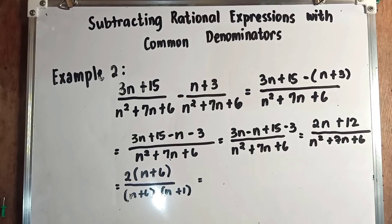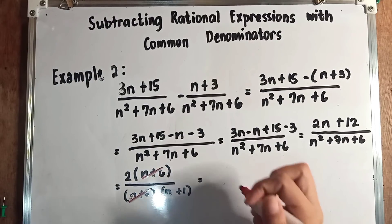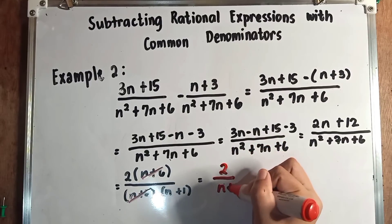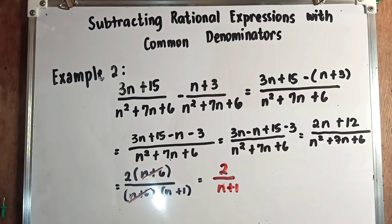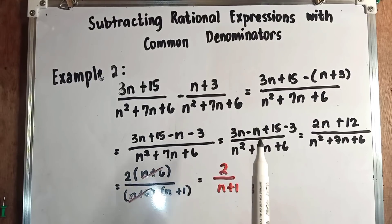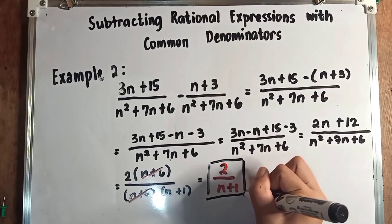Now we proceed to cancellation of the common factor. The common factor is n plus 6, which appears in both numerator and denominator, so we cancel it out. What remains is 2 over (n plus 1). So our final answer when subtracting (3n plus 15) over (n squared plus 7n plus 6) minus (n plus 3) over (n squared plus 7n plus 6) is 2 over n plus 1.